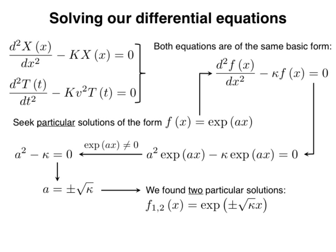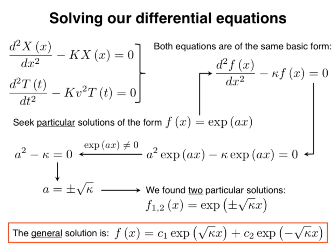These two solutions are called independent because one cannot be expressed as the other multiplied by a constant. It can be shown that if we have two solutions to a differential equation, their linear combination is also a solution. Moreover, the theory of differential equations tells us that any solution of a second-order differential equation can be written as a linear combination of two independent solutions. Thus, the general solution for f(x) is written with arbitrary constant coefficients c1 and c2, which can in general be complex numbers.